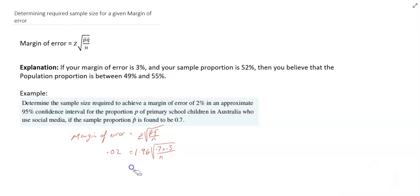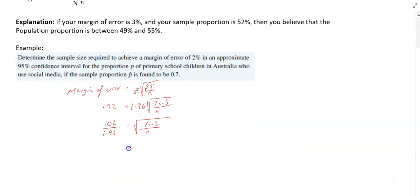I divide both sides by 1.96, so 0.02 divided by 1.96 will be the square root of 0.7 times 0.3 over n. I can square both sides now, so it's going to be 0.02 over 1.96 squared equals 0.7 times 0.3 over n.